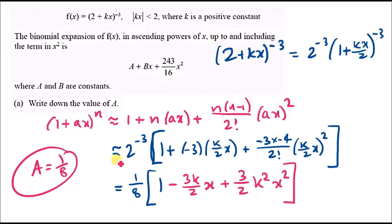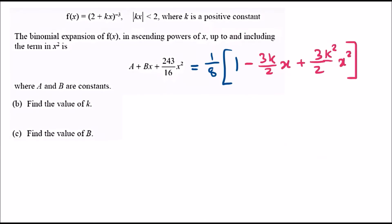Now for parts b and c, we need to find the values of k and B. We already know A equals 1/8. Expanding the right side: 1/8 times 1 is 1/8, then 1/8 times (-3k/2) gives -3/16 kx, plus 1/8 times 3/2 k^2 gives 3/16 k^2 x^2.